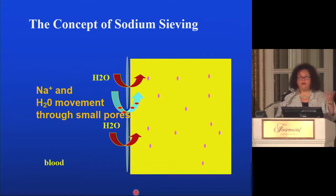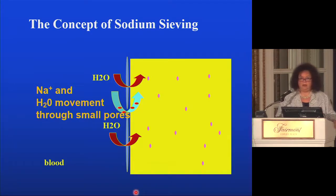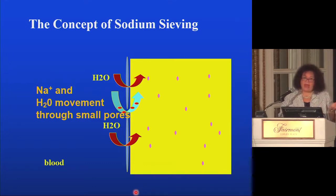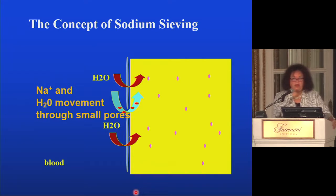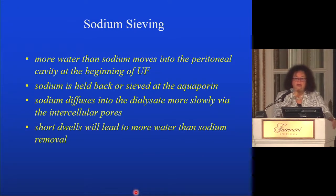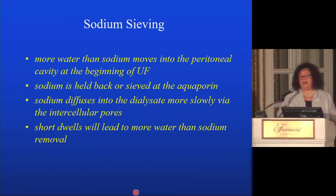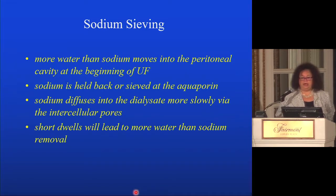If you remove more water than sodium from the patient, they become hypernatremic, and hypernatremic patients are thirsty. If you tell them not to drink, it's like saying stop breathing — they will drink themselves back to normal tonicity. More water than sodium moves with short dwells, and sodium is sieved at the level of the aquaporin since only water can pass through there. Sodium does diffuse into the PD fluid, but does so more slowly through the inter-endothelial cell pores.